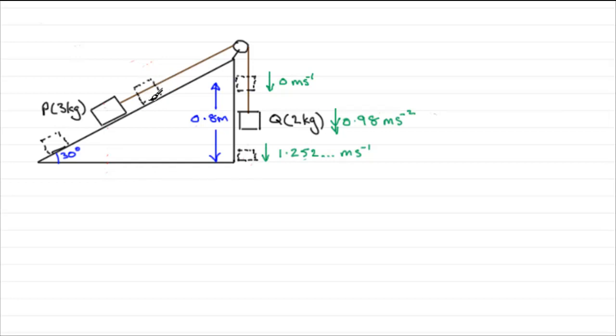And when it's at that point there, it's moving with a speed of 1.252 and so on meters per second. So let's just put that in there first of all, that there's our P and it's going at 1.252 and so on meters per second. So we just put meters per second up there. Okay, I hope you can see that. Now,